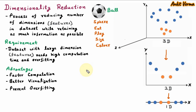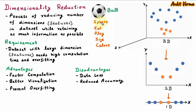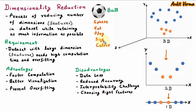There are various disadvantages of dimensionality reduction. First is data loss — if we are taking fewer features, there may be a chance we are missing some important data. Next is reduced accuracy — if we are taking fewer features, there may be a chance the model is not accurate. Next is interpretability challenge — if we are reducing the number of features, there may be a chance the model is not giving the correct meaning. Next is choosing the right features — we are not sure which features are right, which we should remove and which we should select, because if we are missing some feature, we may lose some important information.